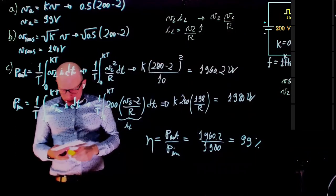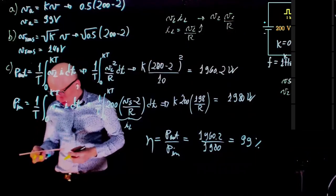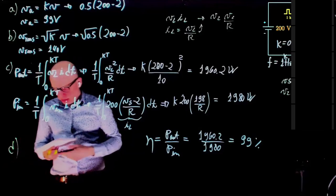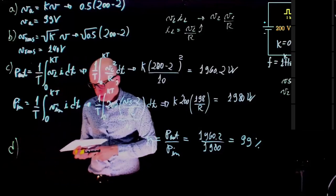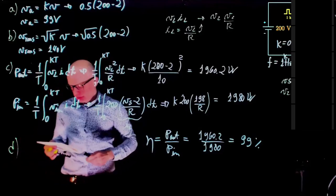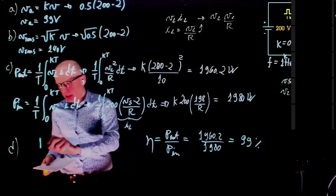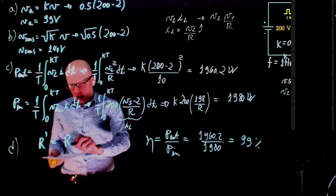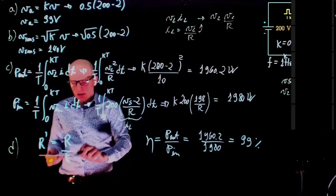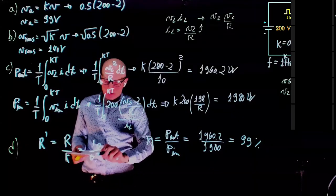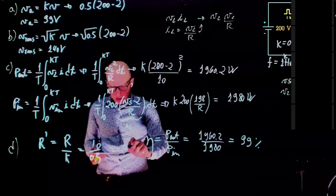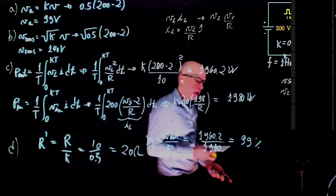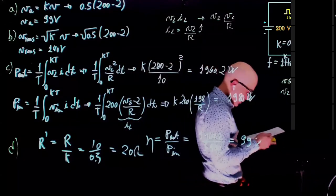Part D — effective input resistance. The effective resistance seen by the input is R over K = 10 / 0.5 = 20 ohms.